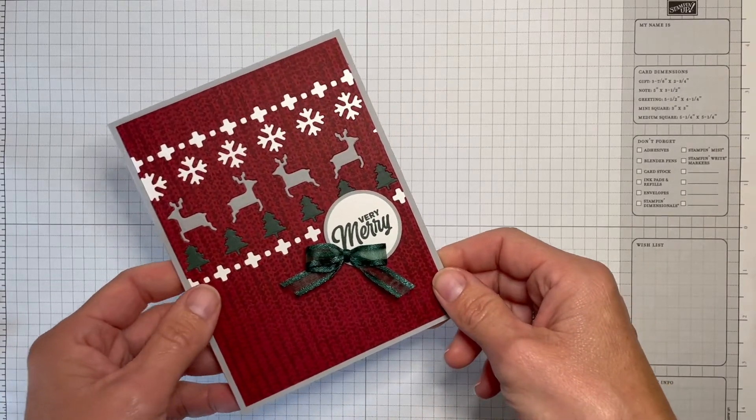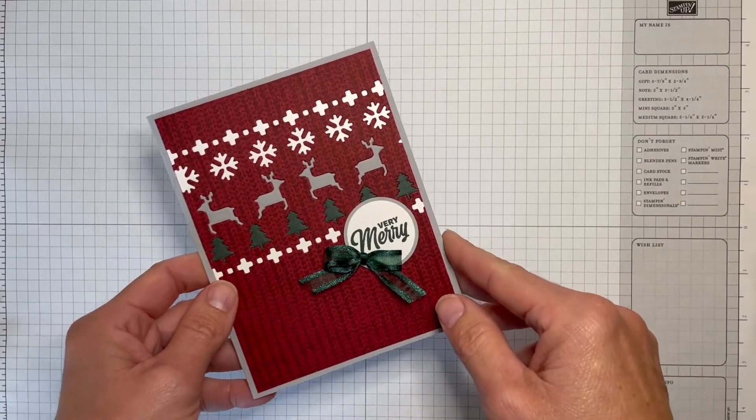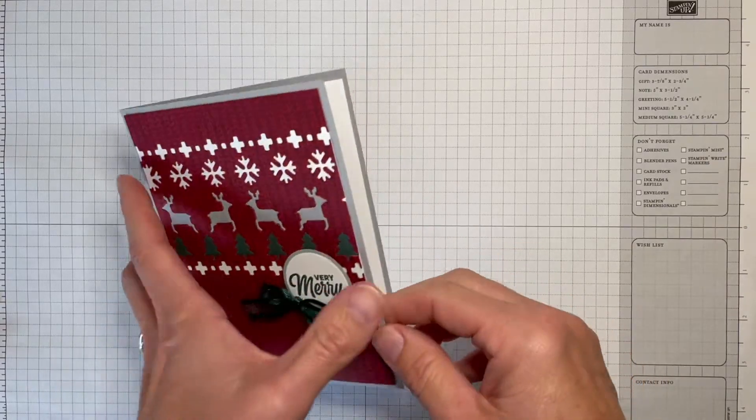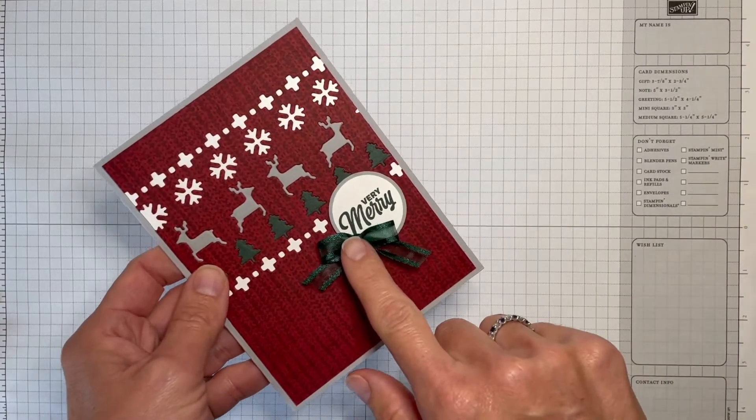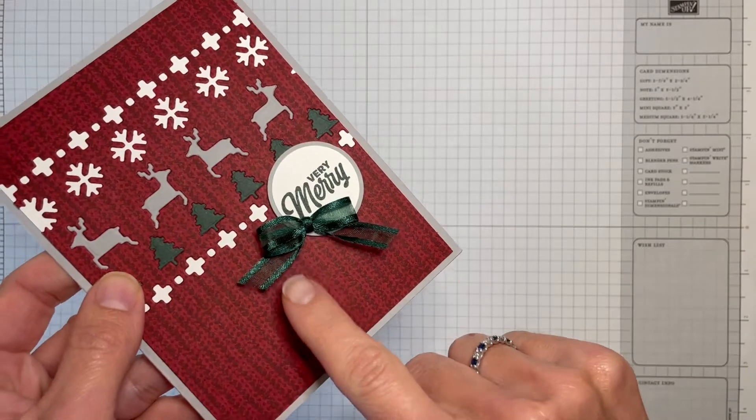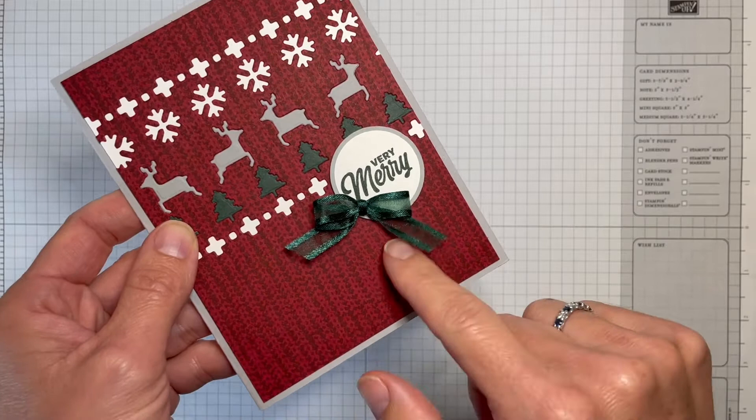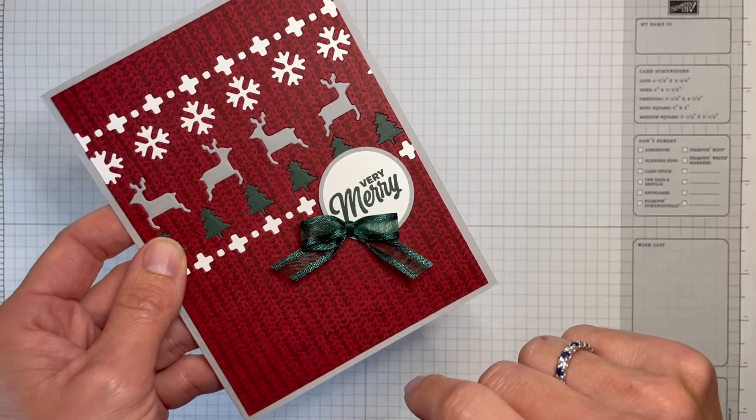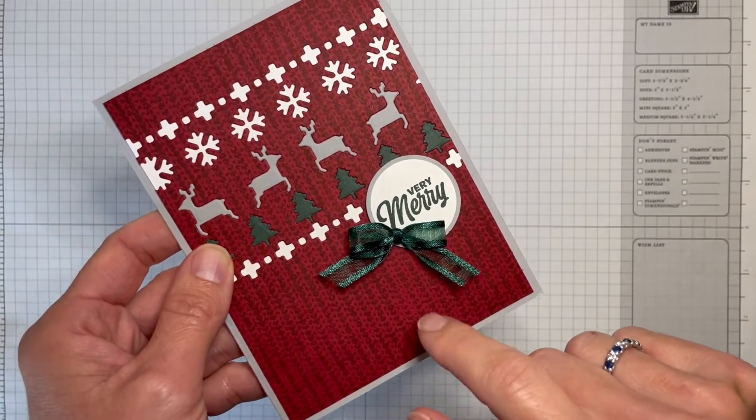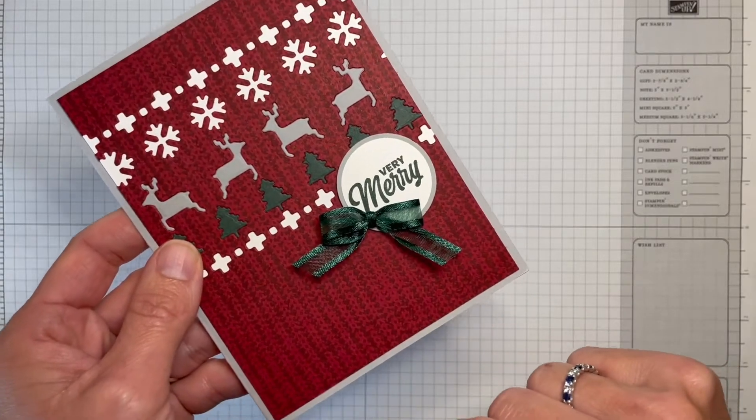You can find the full card instructions there with all the supplies, but today we're just going to learn how to make this fork bow. It's a cute little bow. I like to use this for smaller ribbon, lightweight ribbon. It just makes a really nice, cute, not too bulky little embellishment for your cards.